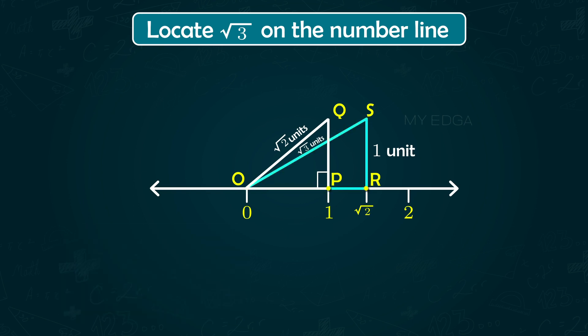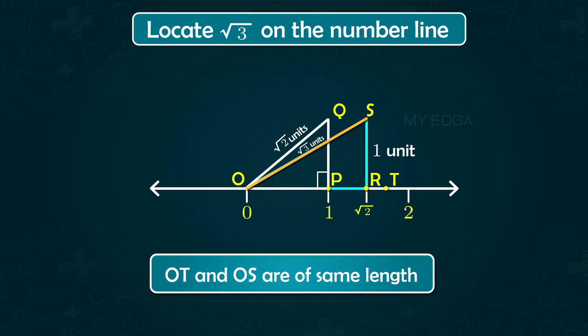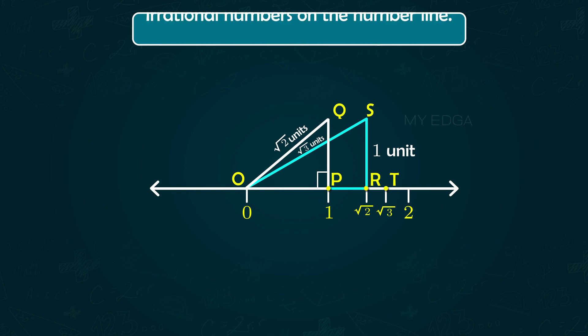Now using a compass with center O and radius OS, draw an arc intersecting the number line at the point T. This point T corresponds to hypotenuse √3 on the number line. So this is how to plot irrational numbers on the number line.